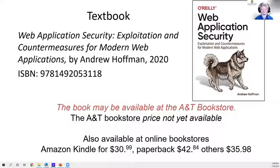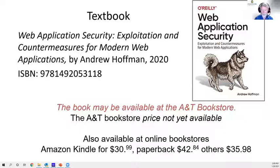Here's the textbook: 'Web Application Security: Exploitation and Countermeasures for Modern Web Applications' — a recent book published around last February. The bookstore may show 'price not yet available,' but you can buy it from Amazon. I got my copy on Kindle — you can read Kindle on a phone or desktop. The paperback is $42 on Amazon, or about $36 from third-party sellers.